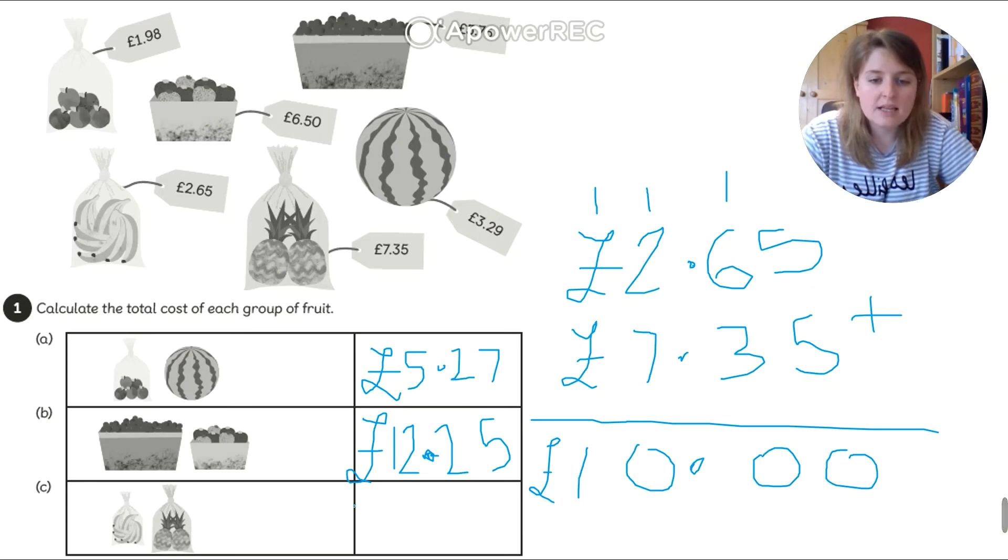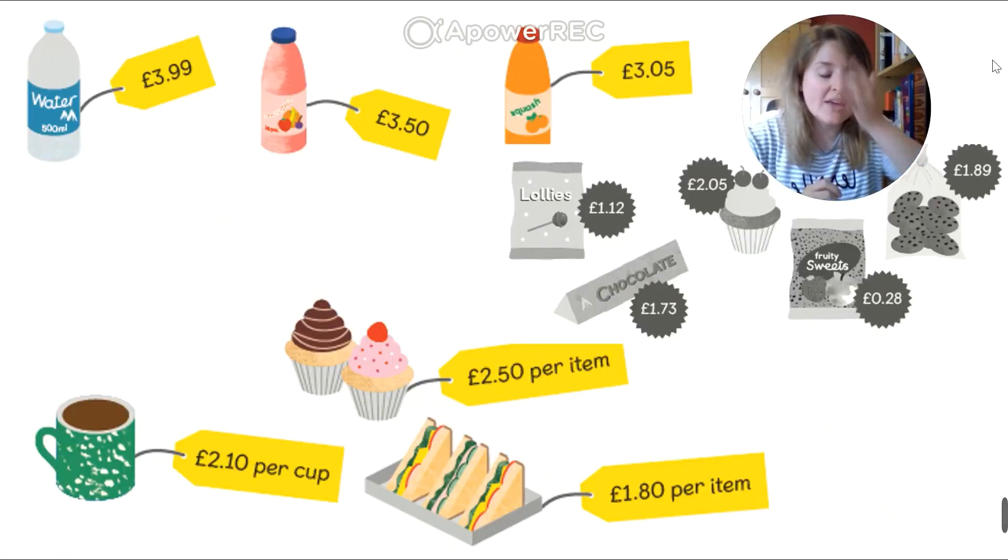So I can write my answer is £10. Now I could do dot, zero, zero here. But I don't need to. Because £10 doesn't have any pennies on it, this answer. So I can just put £10.